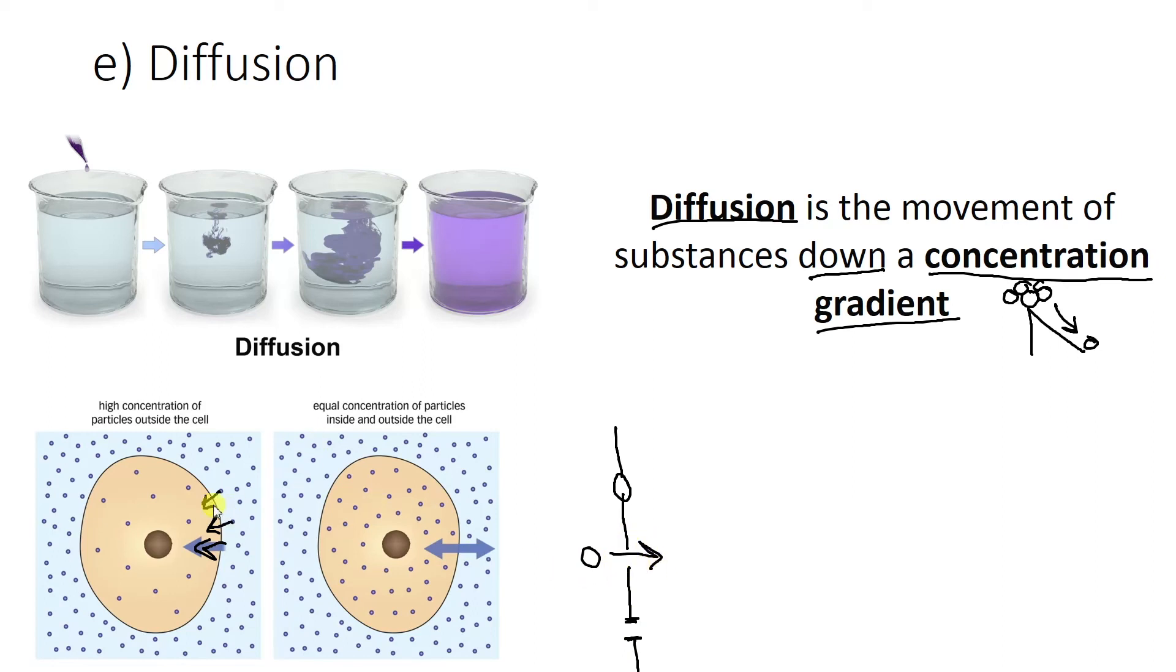What will happen is these particles will all start to move across to the inside until the concentration is equal. So until this gradient kind of becomes horizontal where we have the same amount of stuff on each side. That's when there's basically no net movement, we call it.